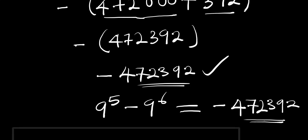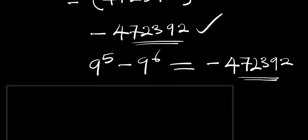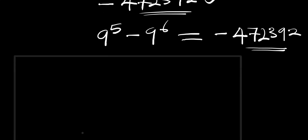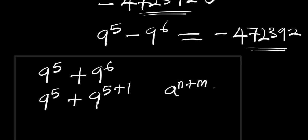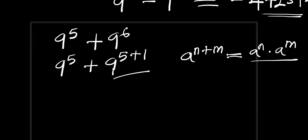Now we have another problem to evaluate: 9 to the power of 5 plus 9 to the power of 6. We are going to use the same method. We rewrite it as 9 to the power of 5 plus 9 to the power of 5 plus 1, and apply the identity a to the power of n plus m equals a to the power of n times a to the power of m. We get 9 to the power of 5 plus 9 to the power of 5 times 9 to the power of 1.